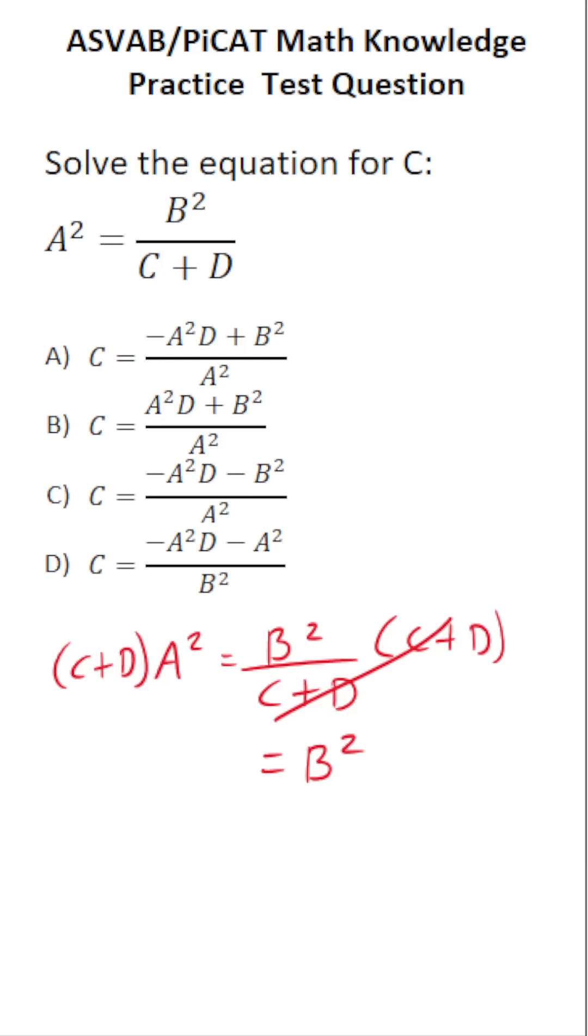Now, in this case, we actually have to distribute this A squared to both C and D accordingly. A squared times C is A squared C and A squared times D is plus A squared times D.